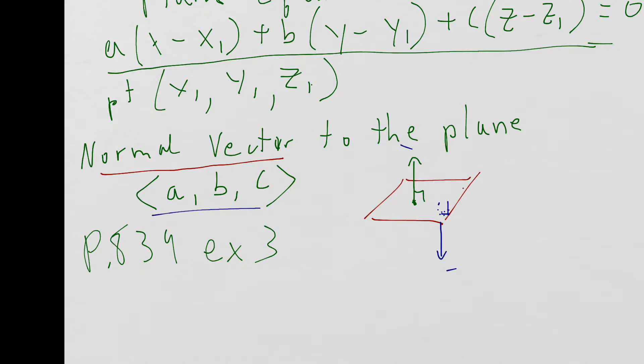Also, so would this vector over here. Okay, or vector over here. Anyways, all you need is a vector coming straight out of the plane. It's called a normal vector.